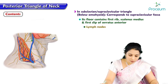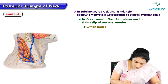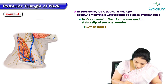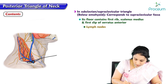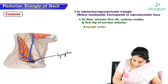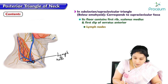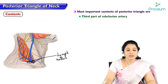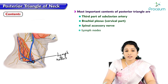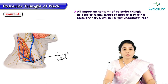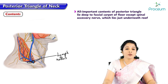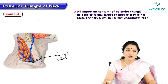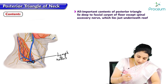Most importantly, the supraclavicular lymph nodes are also contents of the subclavian triangle. The most important contents of the posterior triangle overall are the third part of the subclavian artery, brachial plexus, spinal accessory nerve, and lymph nodes. All these important contents lie deep to the fascial carpet of the floor, except the spinal accessory nerve, which lies just underneath the roof.